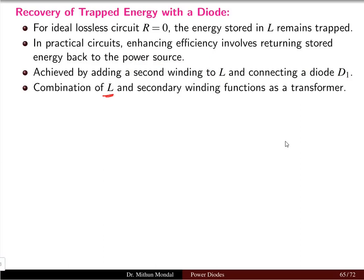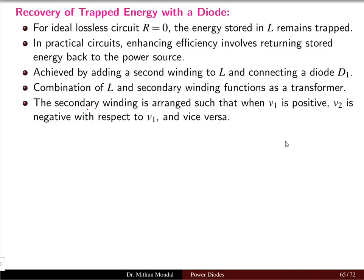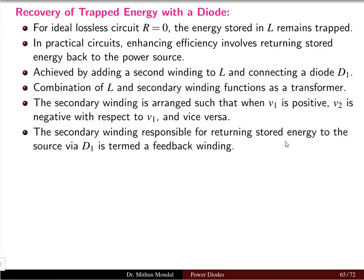The combination of the inductor and the secondary winding functions as a transformer. Similar to transformer action, this is achieved when the inductor and a secondary winding are present. The secondary winding is arranged such that V1 is positive and V2 is negative with respect to V1, and vice versa. Here, V1 and V2 are the voltages of the primary and secondary winding of the transformer. The secondary winding responsible for returning the stored energy to the source via diode D1 is termed the feedback winding.